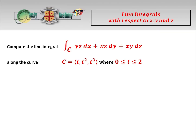This is an interesting little question. We are looking at line integrals now with respect to x, y and z. We're going to compute the line integral of yz dx + xz dy + xy dz over the curve C parameterised by (t, t², t³) between t = 0 and t = 2. We're going to do it two ways: the first way is the recommended way, and the second way is not recommended but interesting to know.